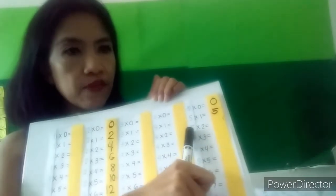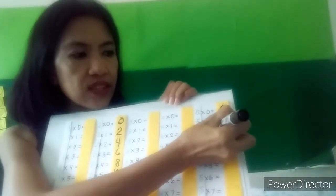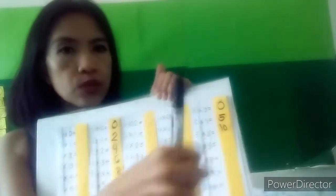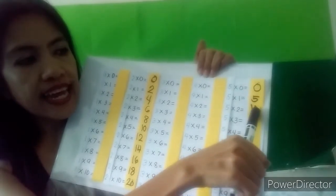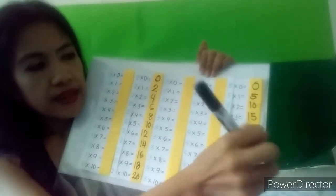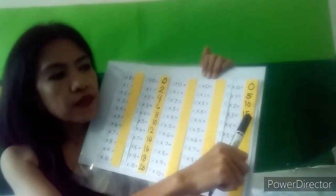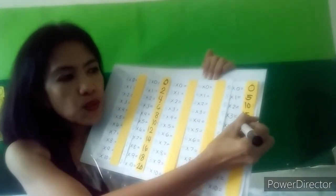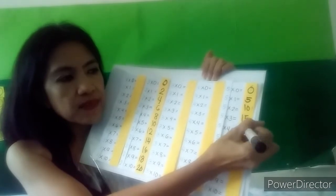Five times zero is zero. Five times one is five. Five times two: five plus five is ten, so five times two is ten. Five times three: ten plus five is fifteen, so five times three is fifteen. Five times four: fifteen plus five is twenty, so five times four is twenty.